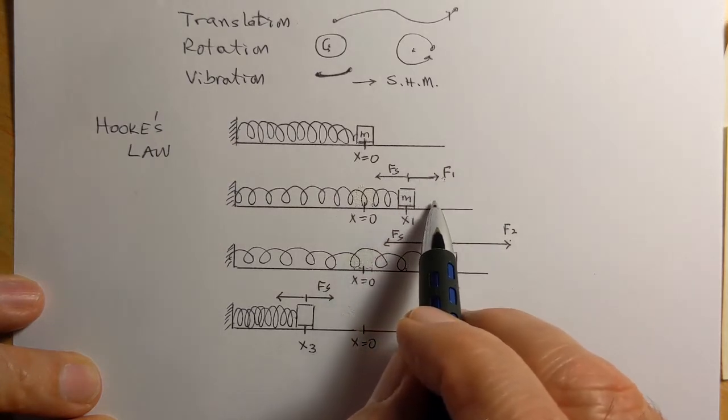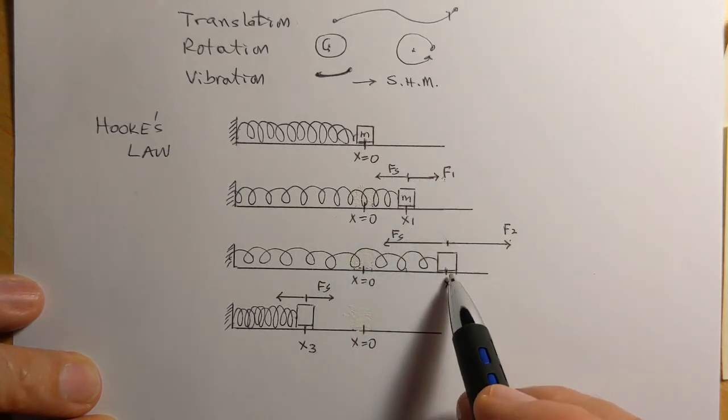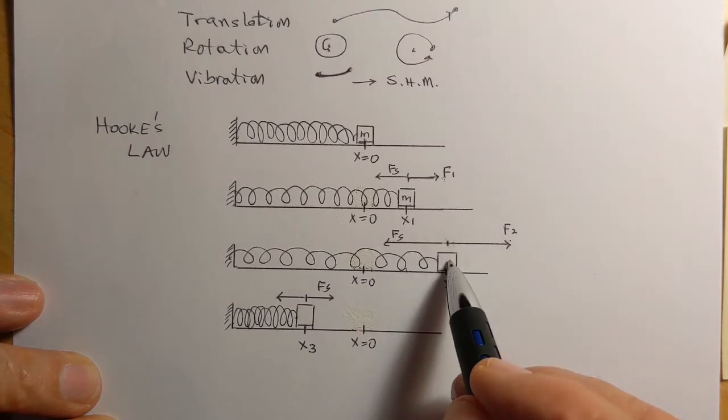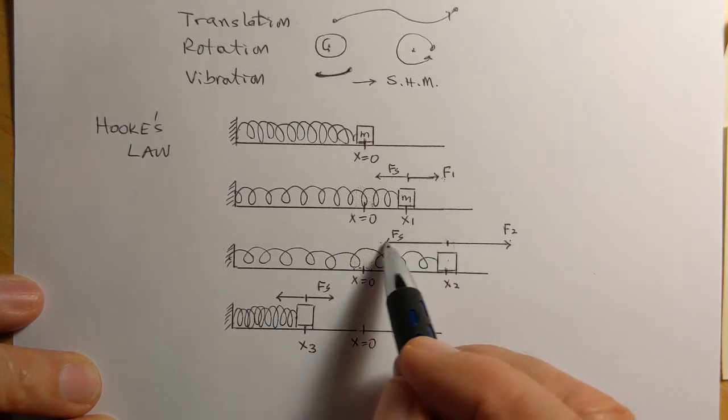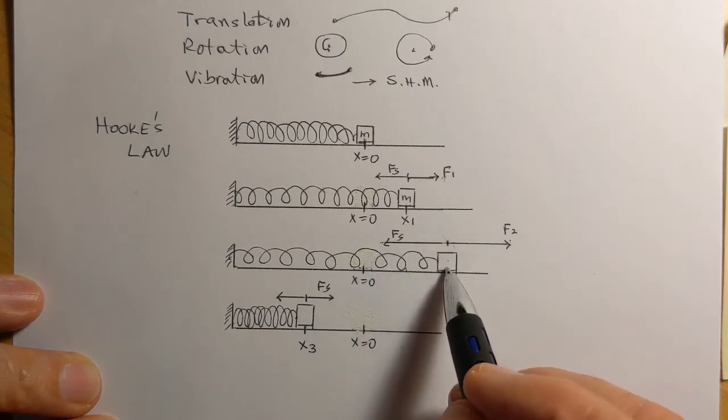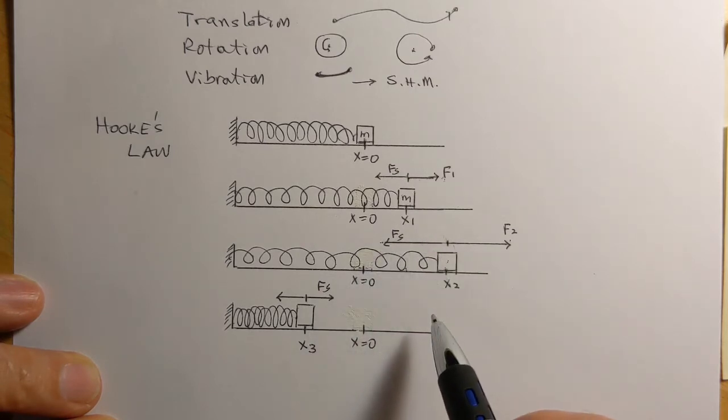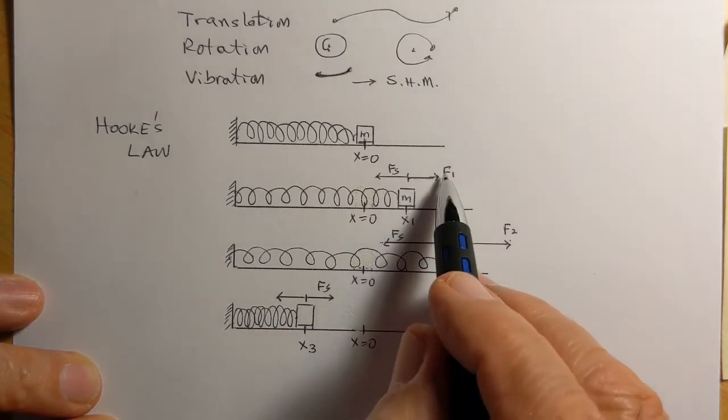Now if we double this force or increase this force and make it F2, as we increase this force the spring will stretch more and reach some new position x2. If it's held over here, that means that this force is balanced exactly by this force due to the spring. In equilibrium the two are equal.